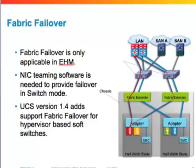Fabric failover is a feature only applicable in end host mode. Using fabric failover, instead of requiring any teaming software on the host itself, active-passive NIC teaming is offered as part of the fabric services. When you create a vNIC and specify it as a fabric failover vNIC, if there is a disruption anywhere along the primary path going out of the UCS fabric interconnect, traffic is seamlessly sent across the other path. The OS sees the vNIC as remaining up, and you do not require any teaming software on the host, removing a layer of management complexity.